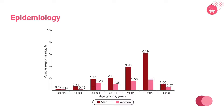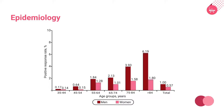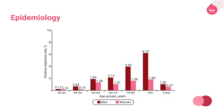In a study conducted using data derived from the Framingham Heart Study, it was found that the lifetime risk of developing IHD at the age of 40 years was 1 in 2 for men and 1 in 3 for women. At 70 years, it changes to 1 in 3 for men and 1 in 4 for women.